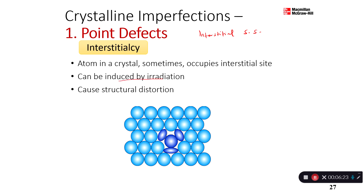This can be induced by irradiation or heat, and it causes structural distortion. Even in a normal interstitial solid solution there may be some distortion, but having an atom that is really not supposed to be there causes a greater structural distortion — you can see in the shape of the atoms that they will have changed because of this.